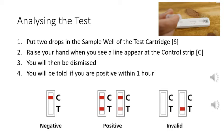As soon as you see a line appear at C, this is the control strip, you should raise your hand. The testing assistant will then come and check and dismiss you.